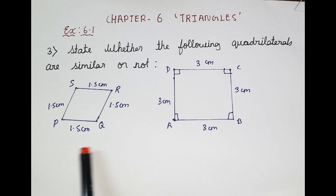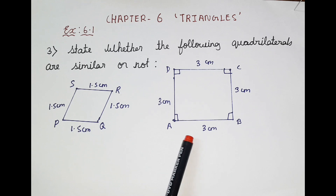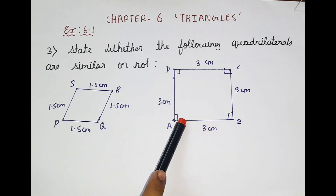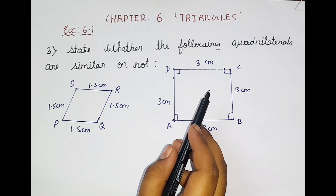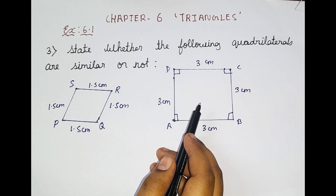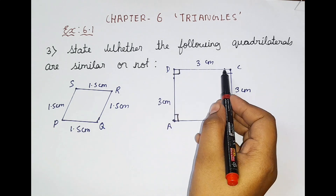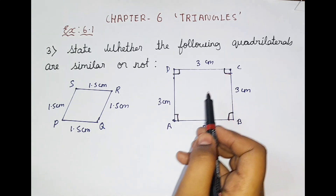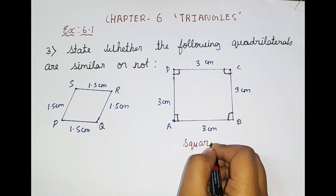Here they have mentioned two quadrilaterals. So here we have one quadrilateral and here also we have a quadrilateral. We can say this first one is a square. Why? Because this figure is having four sides, and one more property of a square is all angles are 90 degrees. So here it is 90 degrees, here also 90 degrees, and here also 90 degrees. So it is a square.